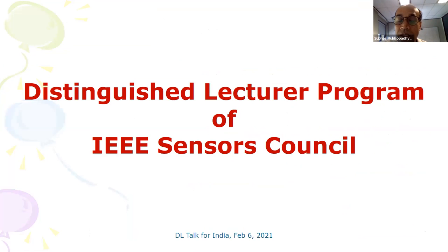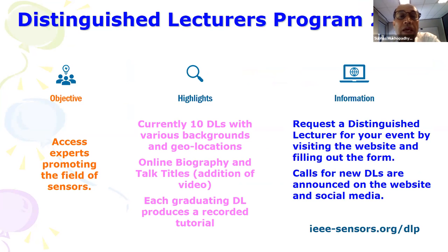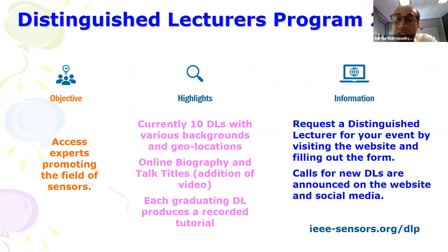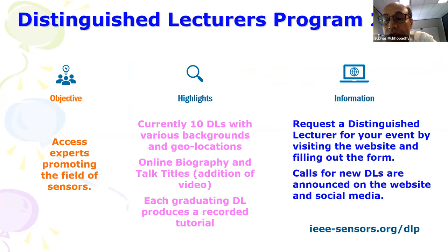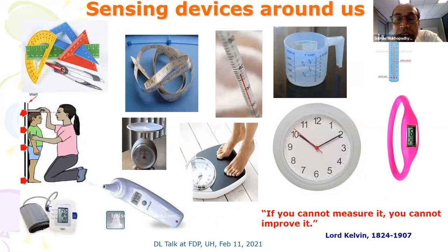As one of the IEEE Sensors Council Distinguished Lecturers, the whole idea is to share research activities among fellow colleagues so that everyone benefits. There are 10 distinguished lecturers with the IEEE Sensors Council at the moment. You can get details on the website, and if you want to organize any kind of distinguished lecture seminar, you can request a distinguished lecturer. These days there is no need of travel, so it's not difficult — the only problem is adjusting the time.